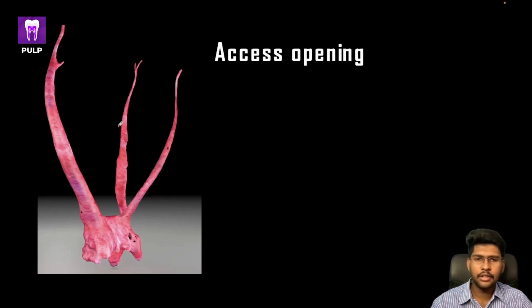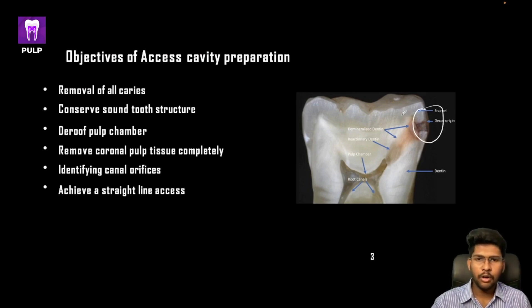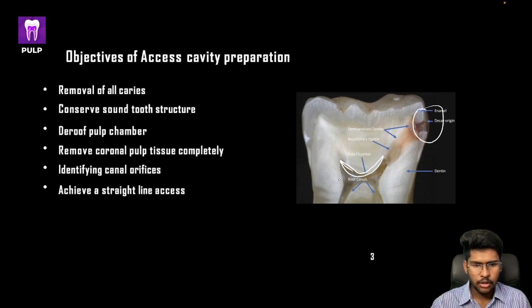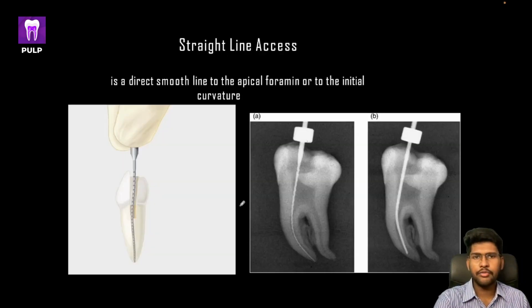The access opening is the first step in your endodontic treatment, and if you get your access right then everything will be right. In order to create a very good endodontic access cavity, you need to follow a set of guidelines: first, remove all the carious tooth structure; second, conserve tooth structure as much as possible; third, completely de-roof the pulp chamber; fourth, remove all coronal pulpal tissue; and fifth, identify the canal orifices.